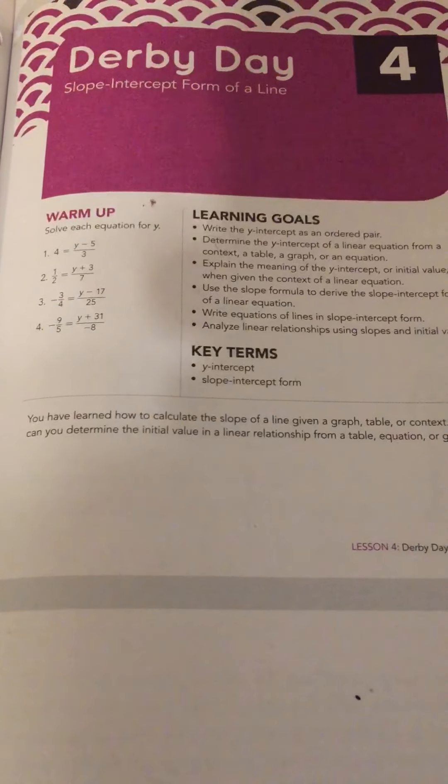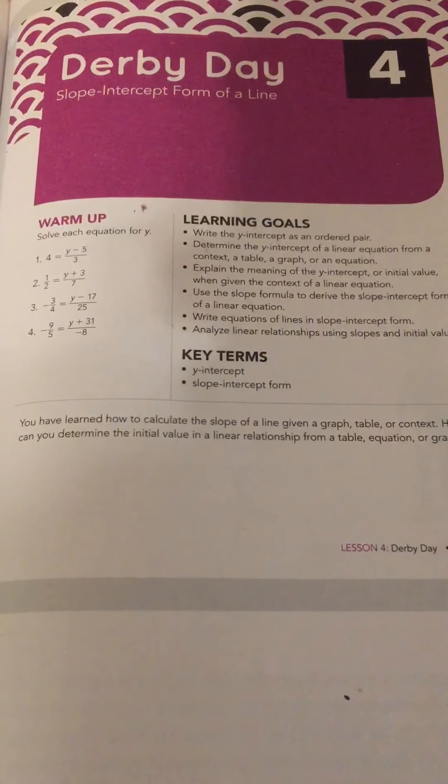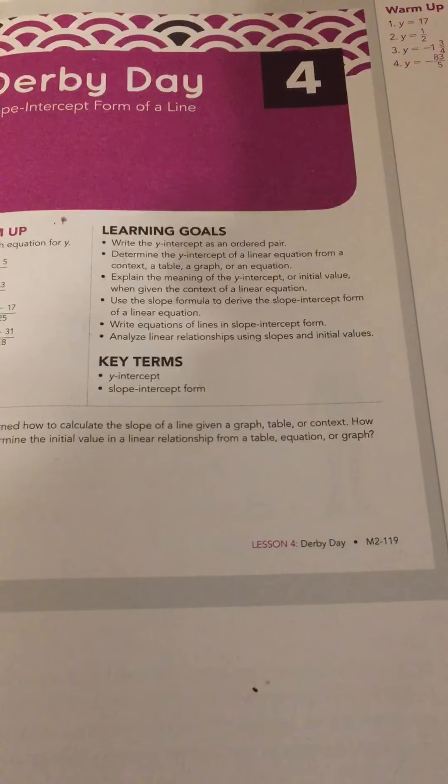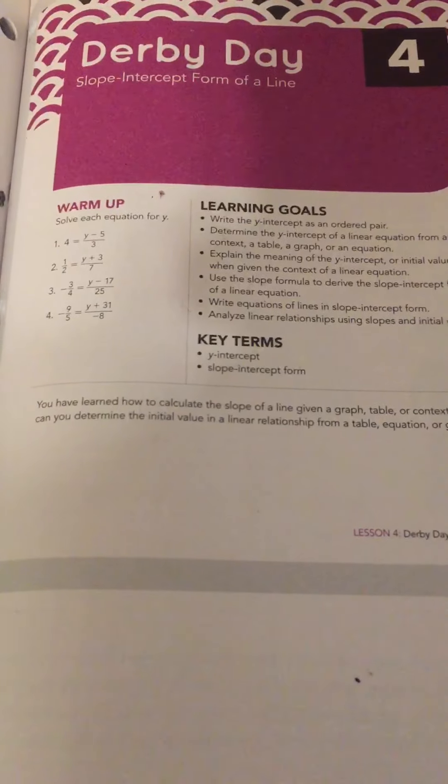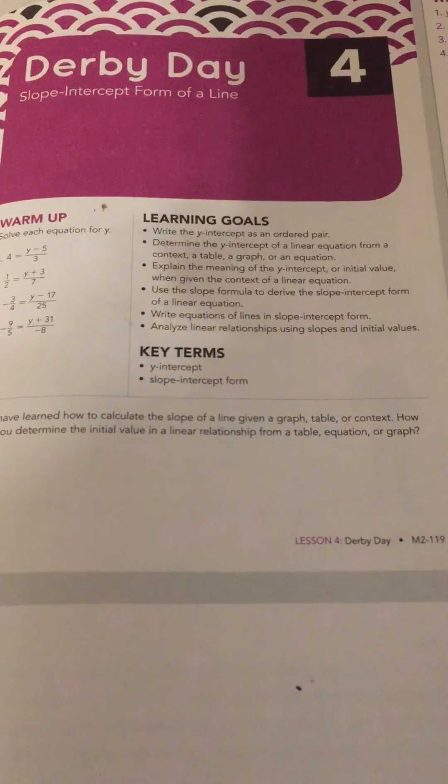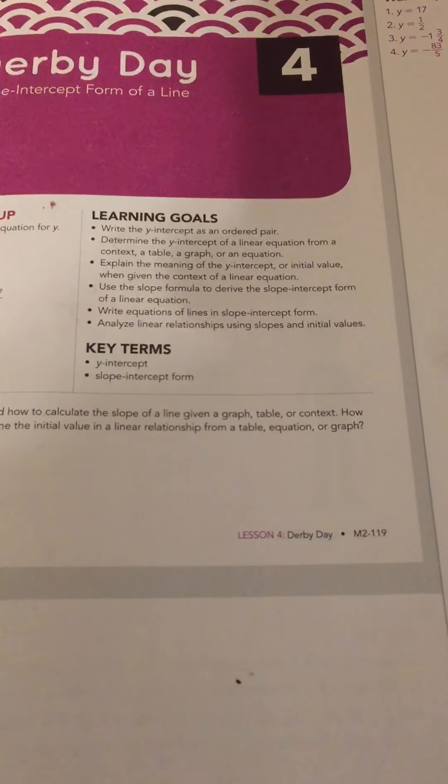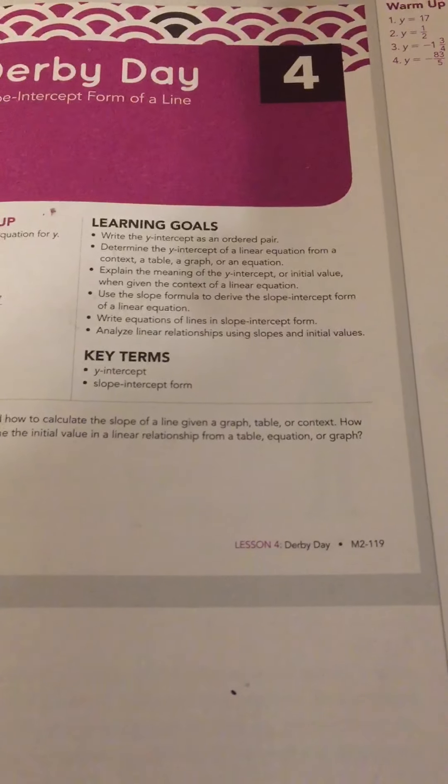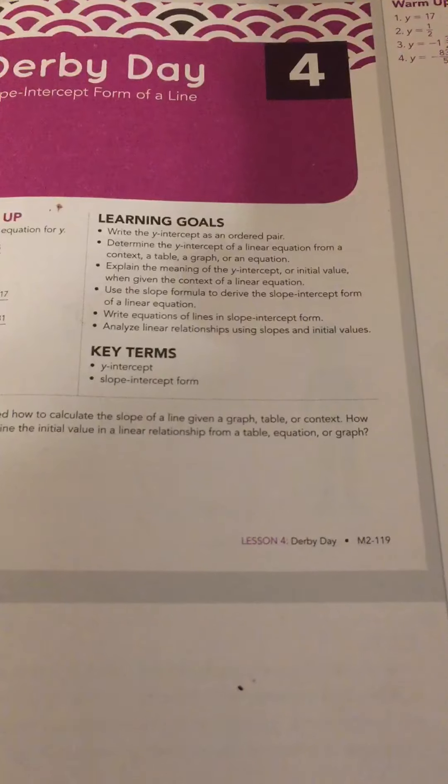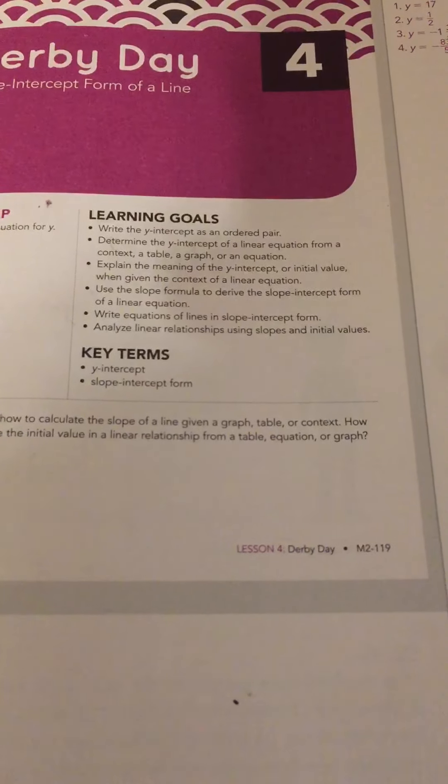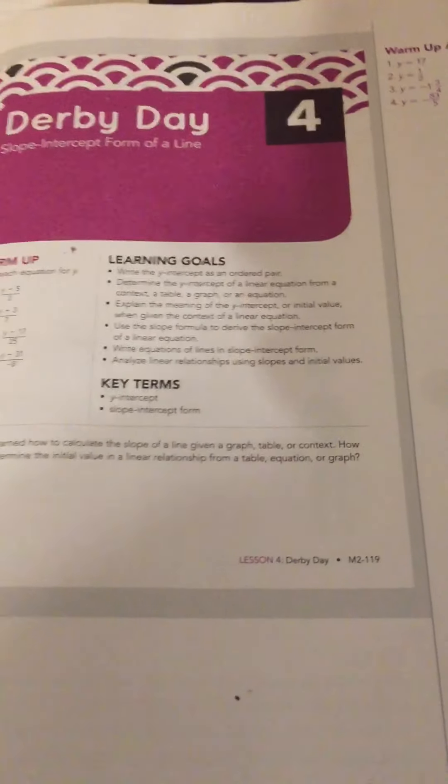So you guys can read your learning goals, but the essential question for today is that we have learned how to calculate the slope of a line given a graph, a table, or the context. How can you determine the initial value, a.k.a. y-intercept, in a linear relationship from a table, equation, or a graph? So we know that determining our y-intercept from looking at a graph is usually fairly easy if the y-intercept is represented there visually, but sometimes it isn't.